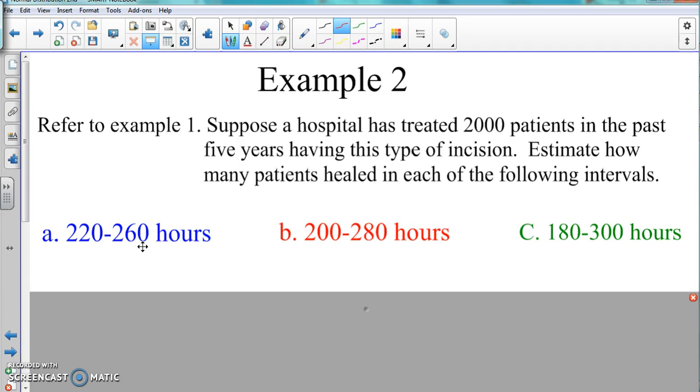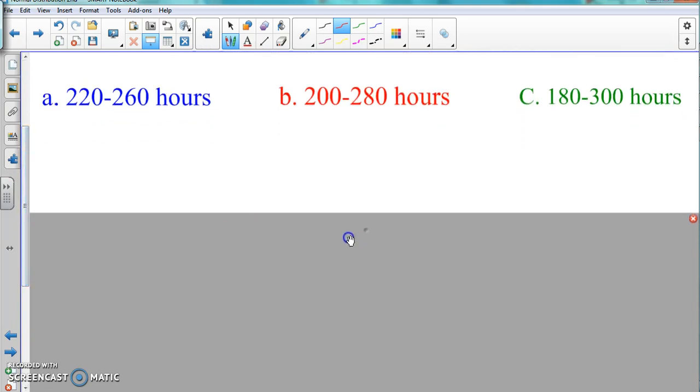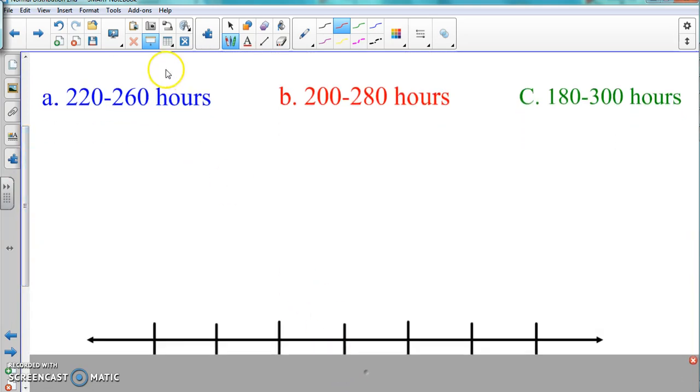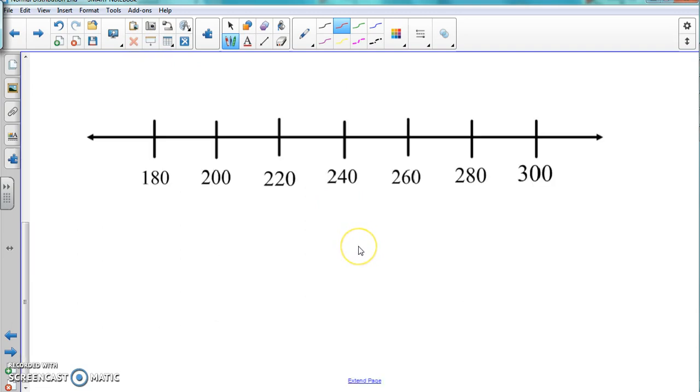How many people will be healed within those ranges? This is what doctors use to try to figure out how long it's going to take you to heal up and be normal. We're coming back to our bell-shaped curve from example one.